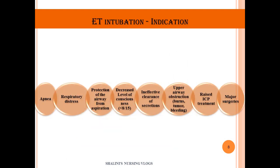The indications for endotracheal intubation include: apnea, respiratory distress, protection of the airway from aspiration, patients with a GCS less than eight, ineffective clearance of secretions, upper airway obstruction (which can be due to burns, tumor, or bleeding), increased ICP, and treatment or preparation for major surgery.